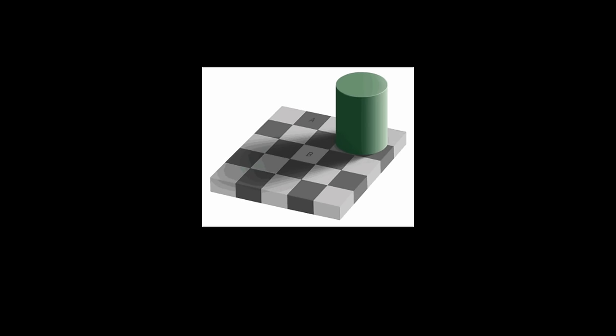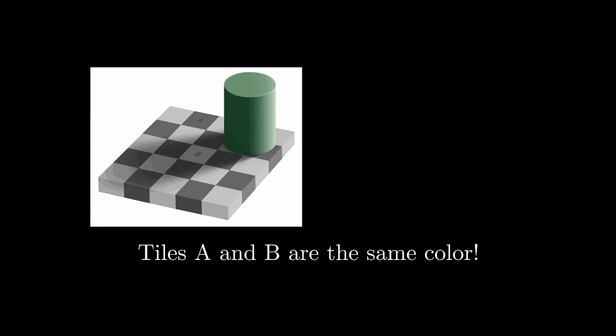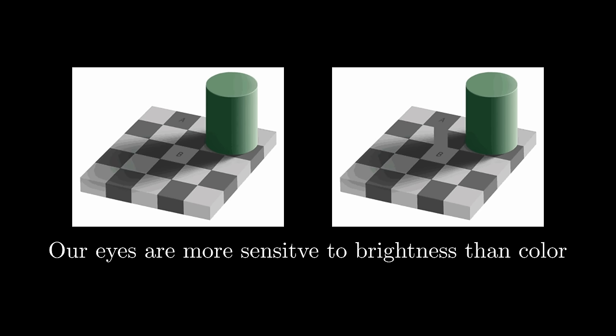Here's an interesting image. If I were to ask you what colors the squares A and B were, most of you would quickly say that A is a darker shade of gray than B. But A and B are actually the same color. This picture is designed to trick our visual system. Once we have a connector of the common color between the two squares, it's much easier to see that they are in fact the same color.